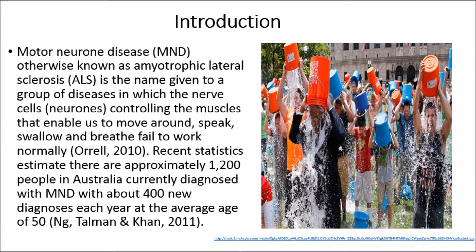Motor Neurone Disease, otherwise known as Amyotrophic Lateral Sclerosis, is the name given to a group of diseases in which the nerve cells — neurons — controlling the muscles that enable us to move around, speak, swallow and breathe, fail to work normally.